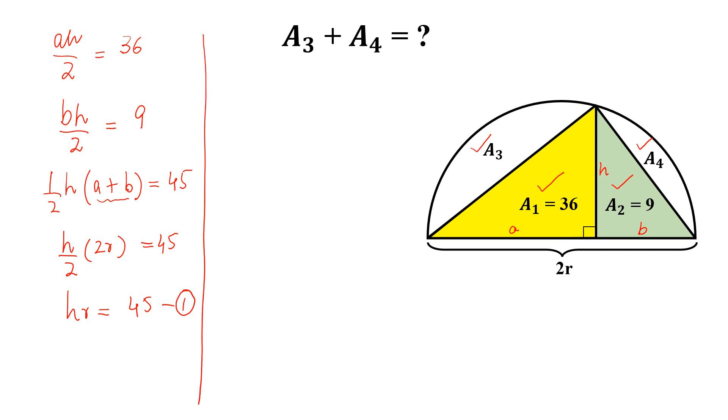Now let this angle is theta, this angle will be 90 minus theta. If this is 90 minus theta, this will be theta, because in a semicircle this angle is 90 degrees. So if this angle is 90 minus theta, this will be theta. And if this is theta, this angle will be 90 minus theta. So from these two triangles, yellow triangle and green triangle, these two triangles are similar.